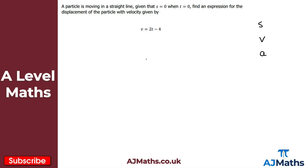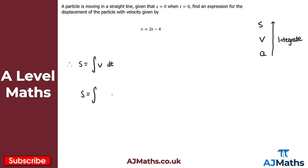What I've been given is the velocity v and I want the displacement s. To go backwards we need to integrate. So if I want s, I need to integrate v with respect to t. So s is going to be equal to the integral of 2t minus 4 with respect to t.